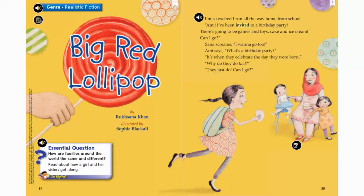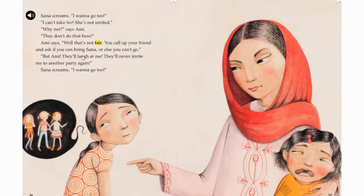It's when they celebrate the day you were born. Why did they do that? They just do. Can I go? Sana screams, I want to go too. I can't take her — she's not invited. Why not? Says Ami. They don't do that here. Ami says, well, that's not fair. You call up your friend and ask if you can bring Sana, or else you can't go. But Ami, they'll laugh at me. They'll never invite me to another party again. Sana screams, I want to go too.